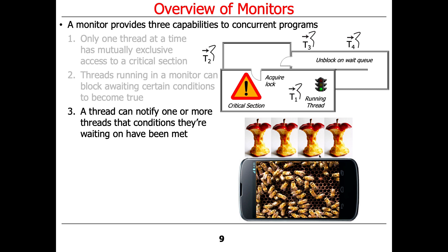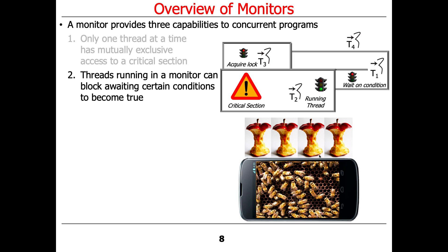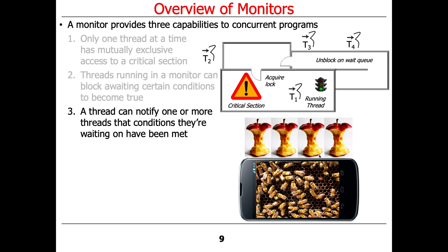The third thing you can do with a monitor object is: one thread can notify one or more threads that the conditions they're waiting on have been met. We'll see later that conditions may have been met by the time the threads wake up and get a chance to go back in. Thread T1 was blocked waiting on the condition, it got notified, and then comes back in and runs again inside the critical section.